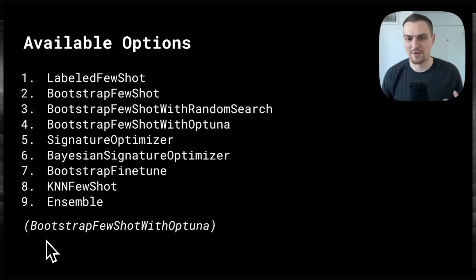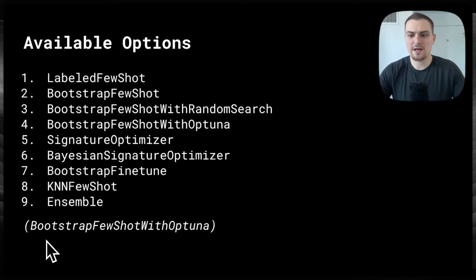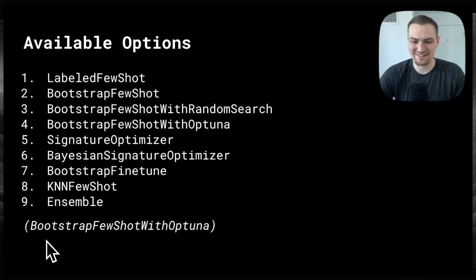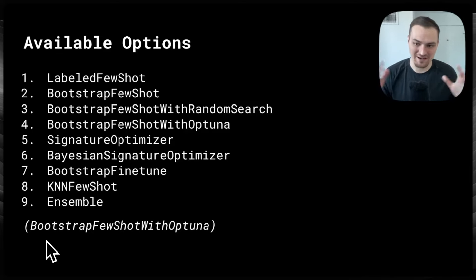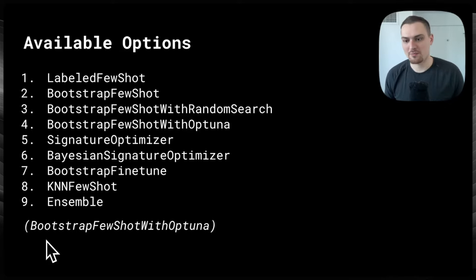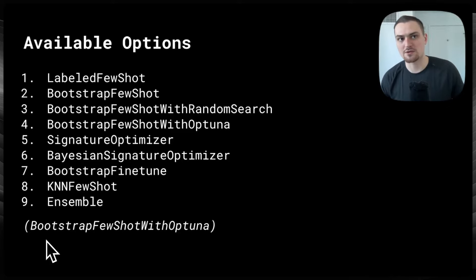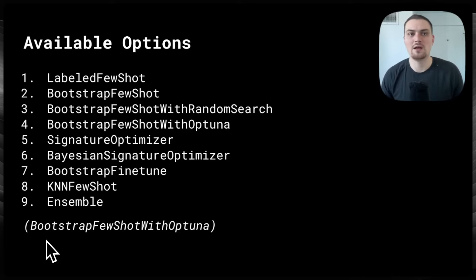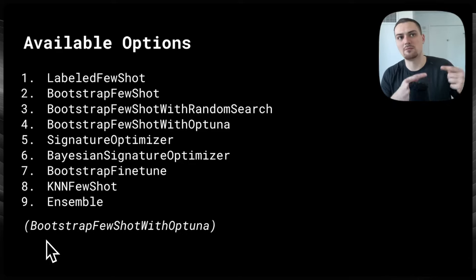Random search is just randomly searching for four and measuring performance — whatever's the best is the best. Optuna uses Bayesian optimization. Bayesian optimization: you have a prior and a posterior over the expected performance of each of the discrete options. Say you have A, B, C, and D, and you have a prior on the performance. You evaluate A and B in tandem, and now you have a posterior on the contribution of A.